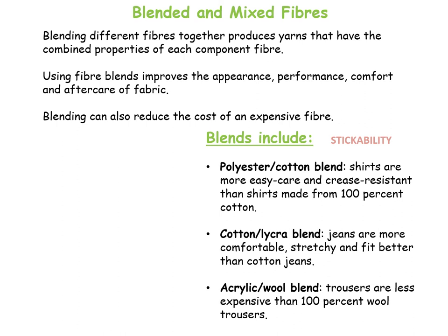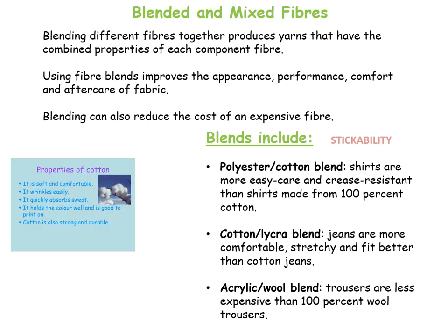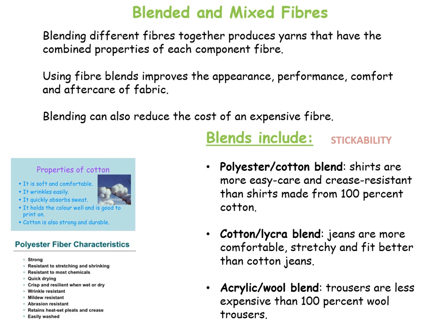Fabric blends and mixes — blending different fibres together produces yarns that have combined properties, improving the appearance, performance, comfort and even aftercare of the fabric. You can also blend a fabric to reduce the cost. For example, cotton is soft and comfortable but creases easily and absorbs quickly, while polyester is strong, abrasion resistant and quick drying. Combining the properties of both gives us polycotton. You can blend most fabrics — for example, blending cotton and Lycra is how we get jeans to fit more comfortably and stretchy. Acrylic and wool blends in trousers makes it less expensive than a full wool blend.